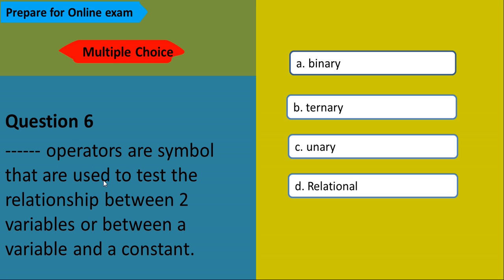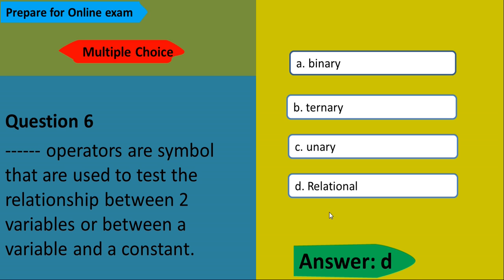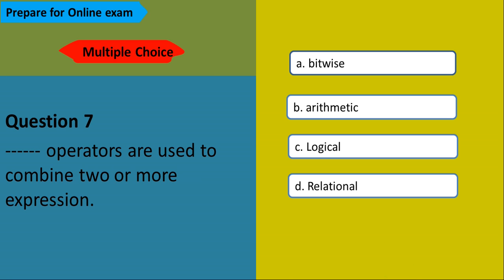These operators are symbols used to test the relationship between two variables, or between a variable and a constant. The options are binary, ternary, and relational operator. The answer is relational operator.